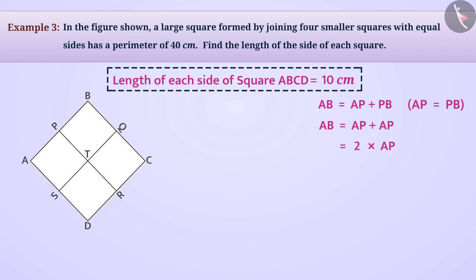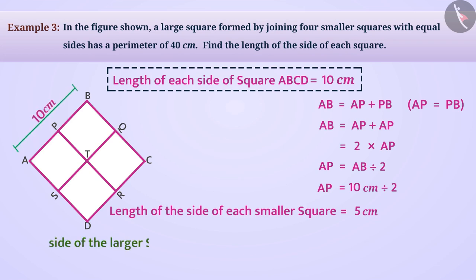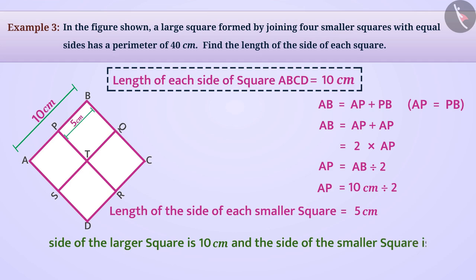Therefore, AP equals AB divided by 2. Since AB equals 10 centimetres, AP equals 10 centimetres divided by 2, which equals 5 centimetres. The sides of all the smaller squares are the same, so the length of the side of each smaller square is 5 centimetres. The side of the larger square is 10 centimetres and the side of each smaller square is 5 centimetres.